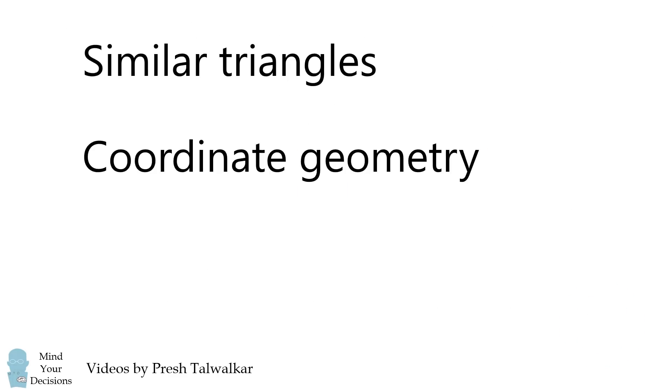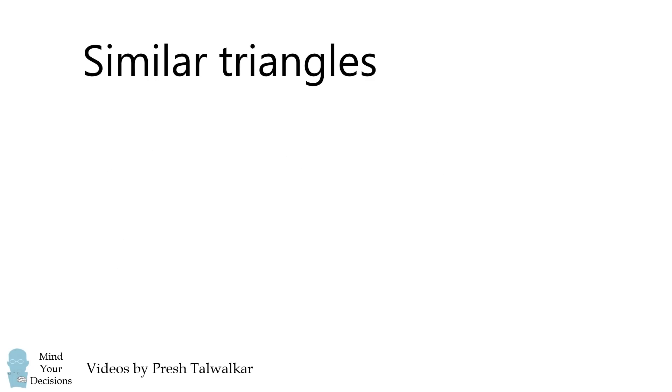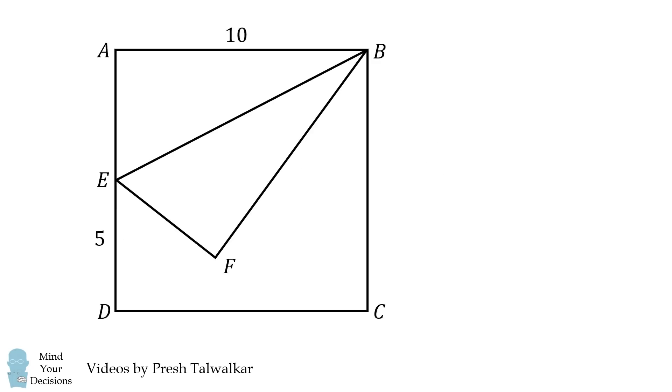There are many ways to solve this problem and I will present three different methods. Let's get started by using similar triangles. First, since E is the midpoint of the side AD, we have that AE is equal to 5.